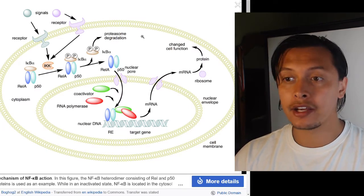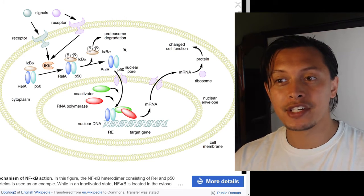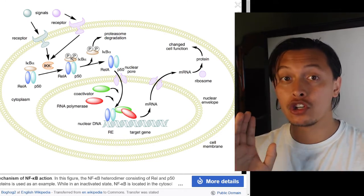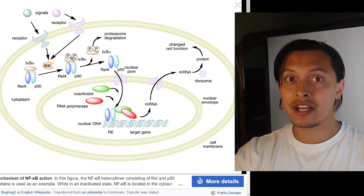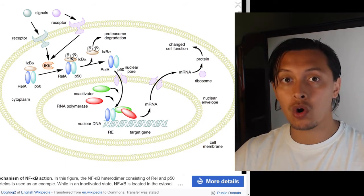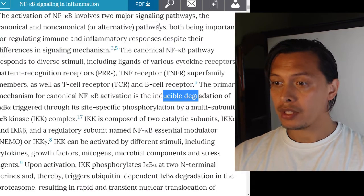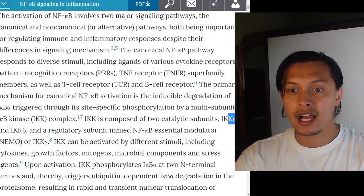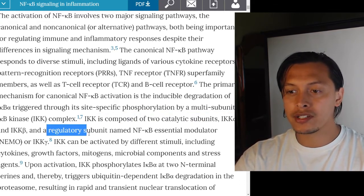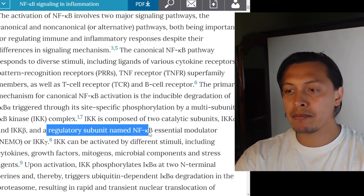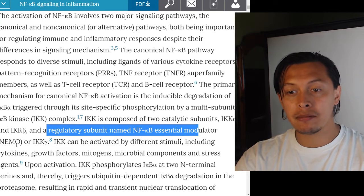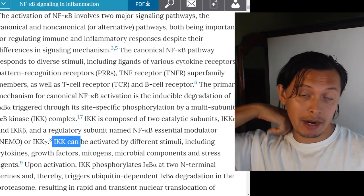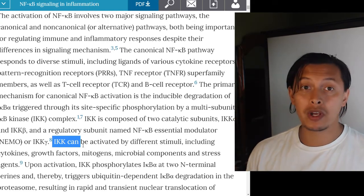Once the signal is received, the I-kappa B alpha gets destroyed — the phosphates don't just pop on and off. It's not a linear gradation: it's all 'no' and then it turns into all 'yes.' IKK is composed of two catalytic subunits, IKK-alpha and IKK-beta, and a regulatory subunit named NF-kappa B essential modulator, also known as NEMO or IKK-gamma.